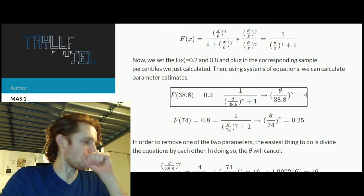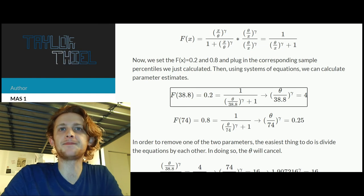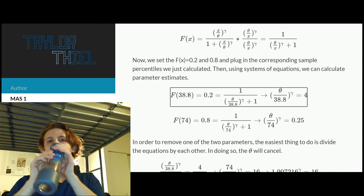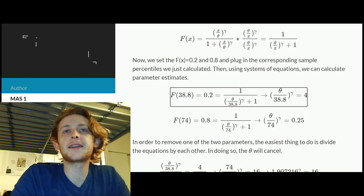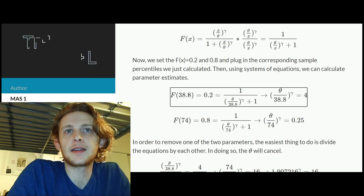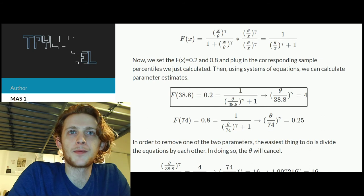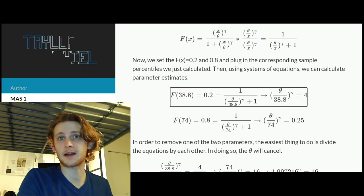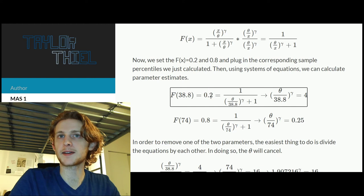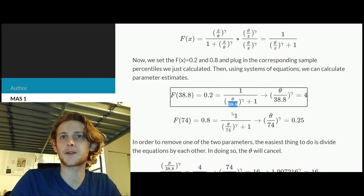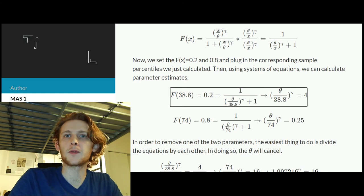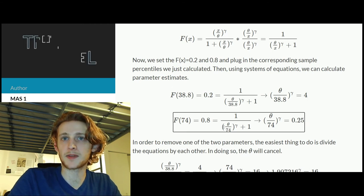But before I even do that, I choose to simplify. So this is the notation they gave us. If you multiply everything by theta over x to gamma, two of the terms cancel and then you're only left with one, so it just simplifies things. Then we can set our x value of our observed percentile equal to its expected percentile.